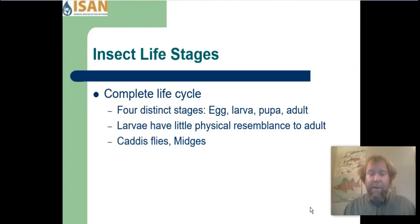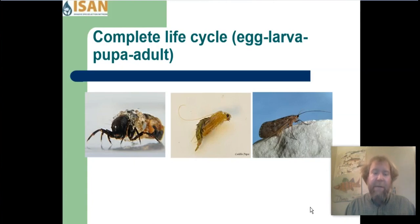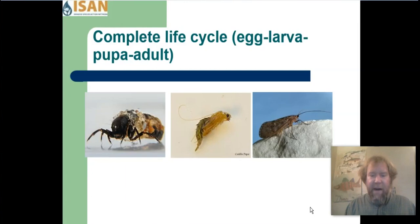Caddisflies and midges are a couple of insects that have a complete life cycle. This picture shows the complete life cycle of a caddisfly. The caddisfly larva is pictured on the left, and this particular species built a protective case out of pieces of pebbles and sand. The second picture is the pupa, which is starting to change — you can see it developing antennae, wings, and legs. The pupa develops inside that case and undergoes metamorphosis, and then what comes out is the adult, pictured on the right.